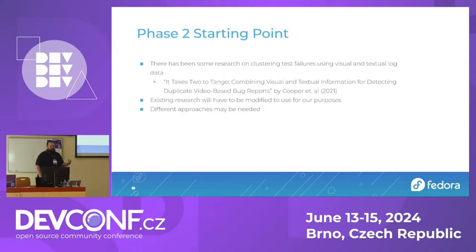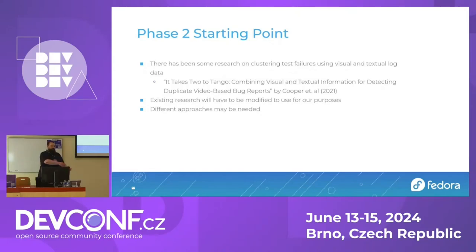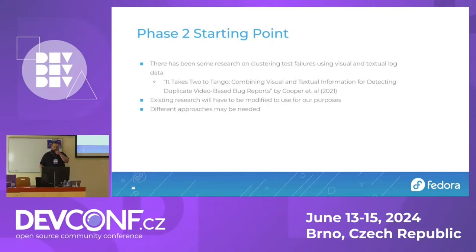In terms of a starting point: there's not a ton of stuff out there on using visual data to classify test results, though that is changing a little. The stuff that has been coming out is more in the mobile space — similar but not quite the same. In particular, there's research done in 2021 where they had mobile application testing with text output and video of the test, and they went through that corpus of tests and found the duplicate failures within it. It's similar enough to at least start looking at as a good starting point.